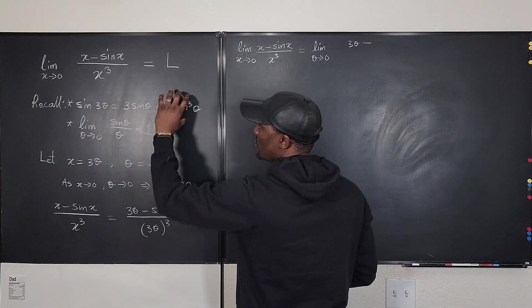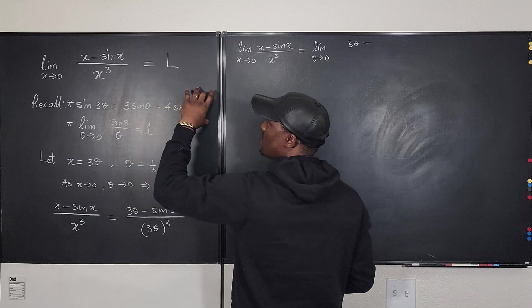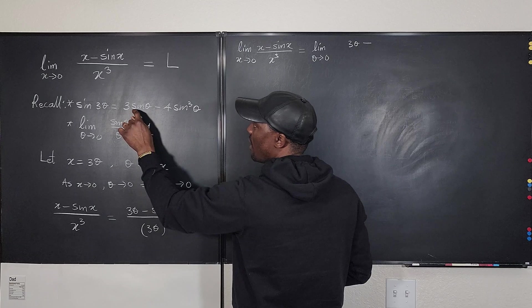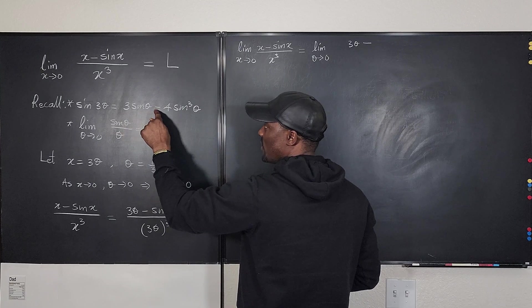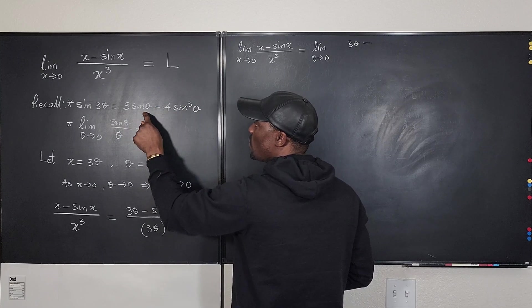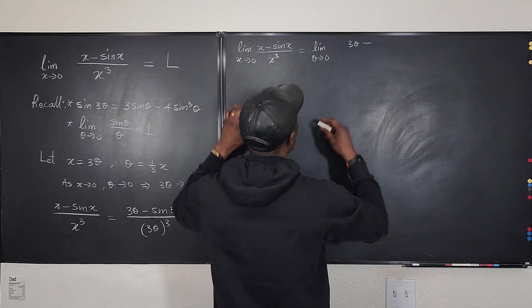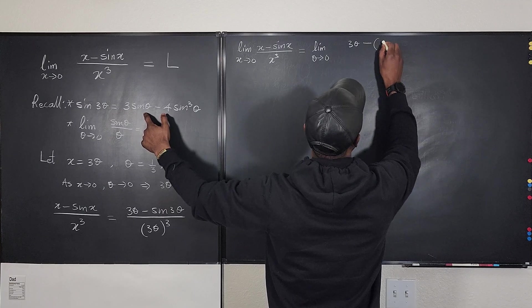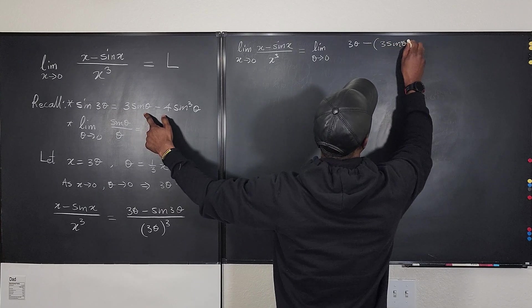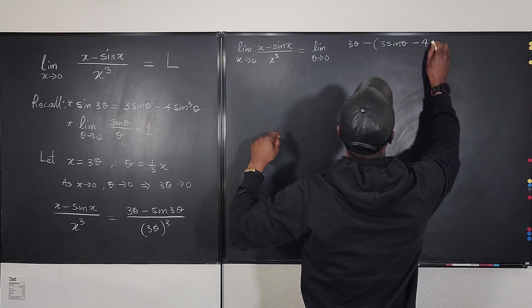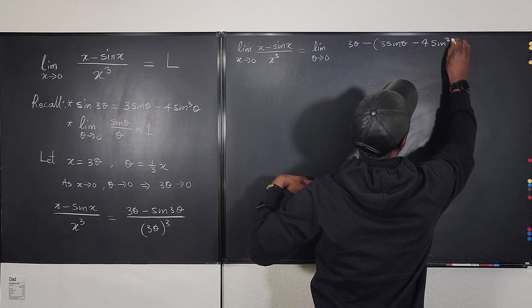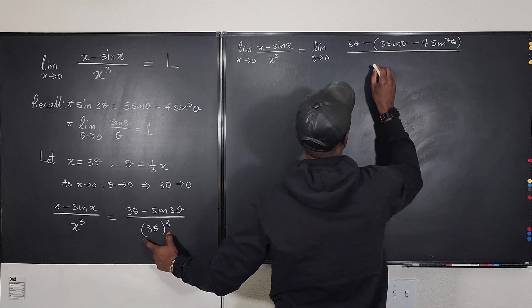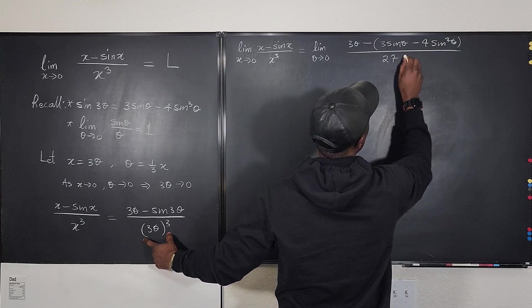But instead of me writing sine 3 theta, I'm going to write this identity, which you know. If this was cosine, you just need to move this here, move this here, change this to cosine, and that's it. You just need to change the positions of this expression and this expression with the minus sign. But this would now be cosine, and that's the cosine alternative to that. So here we have minus. So I'm going to write in parentheses, this is going to be 3 sine theta minus 4 sine cubed theta, divided by, what is this? This is 27 theta cubed.